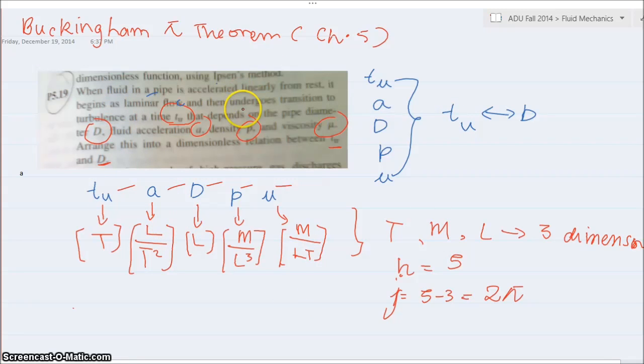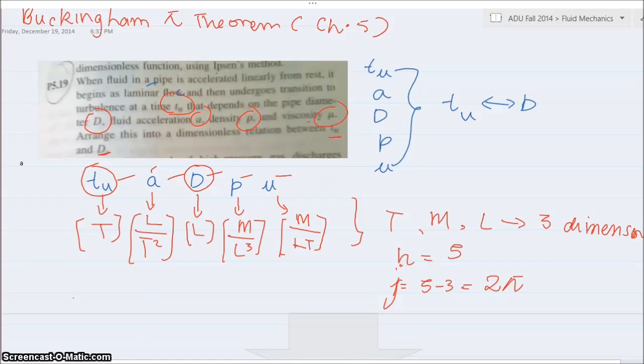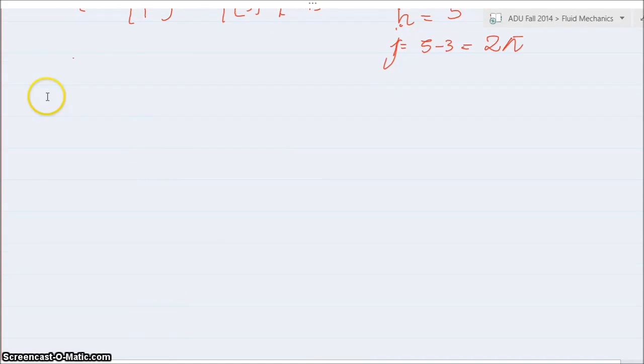First of all, since we know that we need to find T relationship between T_u and D, I don't want to repeat these variables. So, I need to find the repeating variable, which is A, rho, and mu. So, the next thing what I'm going to do is I'm going to write down the repeating variables, which is acceleration, rho, and mu. This means that in both of my pi's, pi1 and pi2, I'm going to have these three and another one.